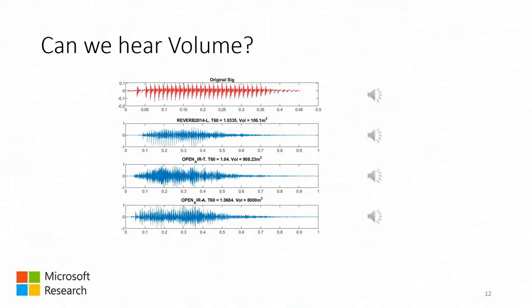One question we had at the beginning is whether we can hear volume at all. These audio examples show a dry signal convolved with impulse responses from three different rooms where the T60 was the same but the volume was very different. All three examples have a T60 of about one second, but the rooms were all different sizes — the first room was only 100 cubic meters, the second was 900, and the third was 8,000 cubic meters.